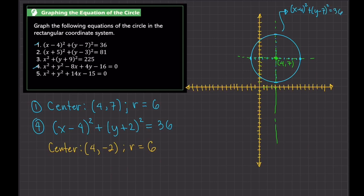Now for the other circle. The center is at (4,-2). So 4 is here. 1, 2, 3, 4. But y is negative 2, so that's here. So the center is here.